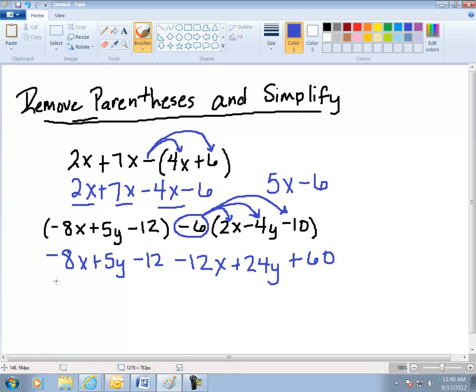And now I'm ready to combine my terms. I've got a minus 8x and a minus 12x. They combine to give me minus 20x. I've got a 5y and a 24y. They're going to combine to give me 29y.